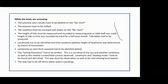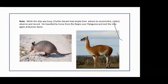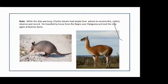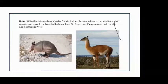While the ship was busy surveying, Charles Darwin had ample time ashore to recognize, collect, observe and record. One of his key characteristics, expanded upon by Professor Henslow, was his ability to collect, observe, and record. He traveled by horse from Rio de Janeiro across Patagonia and met the ship again at Buenos Aires. He saw many things and wrote about many things. The picture here is of an armadillo on the left and a guanaco — the South American member of the llama family, related to the camel — on the right.